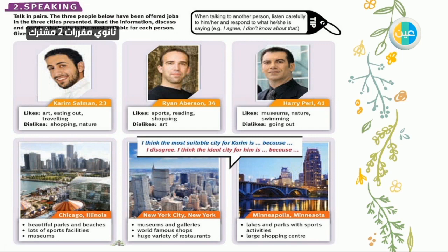In this exercise you're supposed to have a conversation about three people: Kareem, Ryan, and Harry. We need to talk about their interests — what they like and dislike — in order to choose the best city for them. Kareem likes art, eating out, and traveling; he doesn't like shopping or nature. Ryan likes sports, reading, and shopping; he dislikes art. Harry likes museums, nature, and swimming; he dislikes going out.